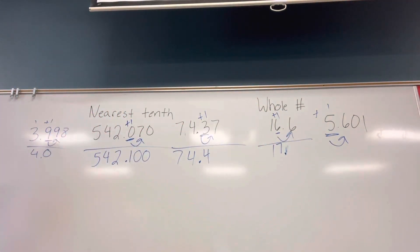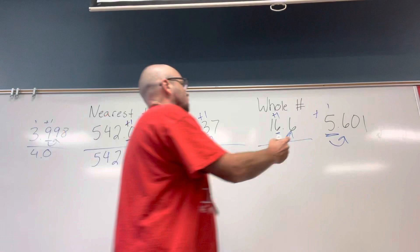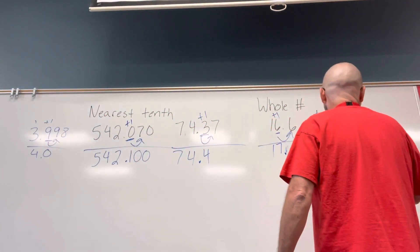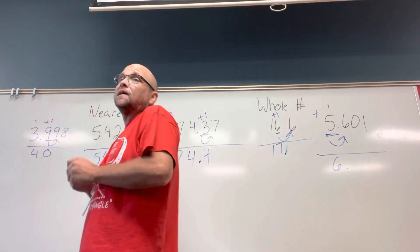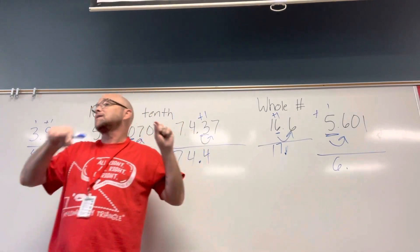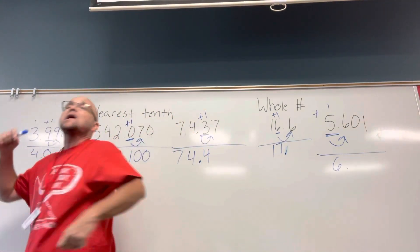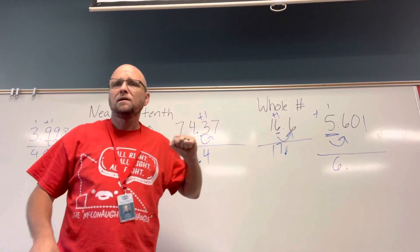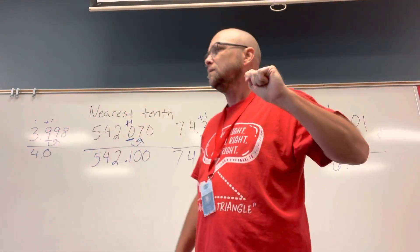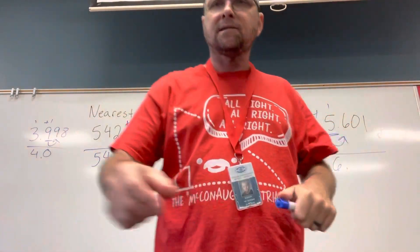Do I have to regroup? No. So that just becomes six. I can make it 6.0. I can make it 6.00. I can make it 6.0000. I can make it 6.400 zeros behind it. It doesn't change anything. All right, let's look at the next slide.